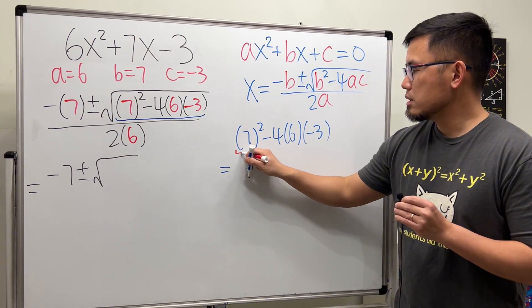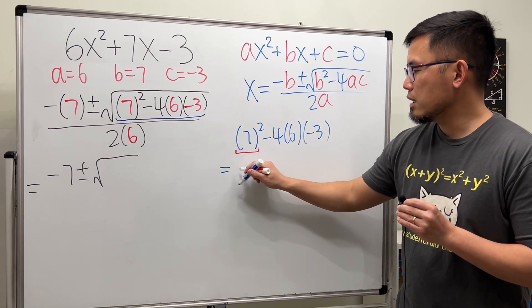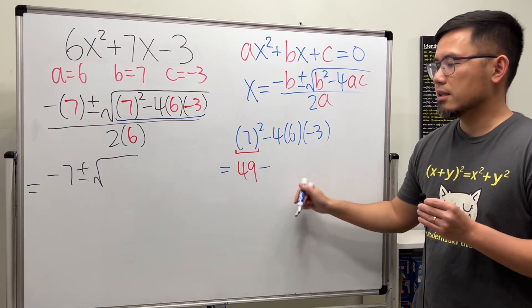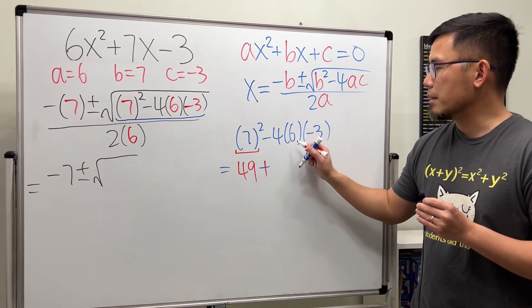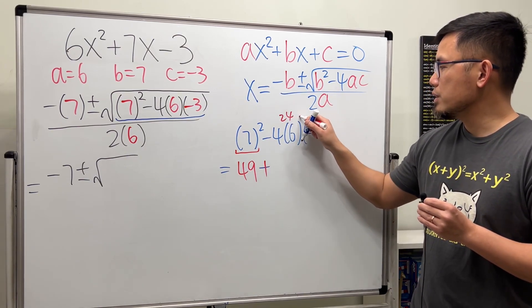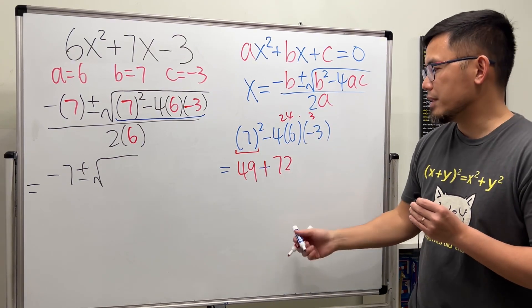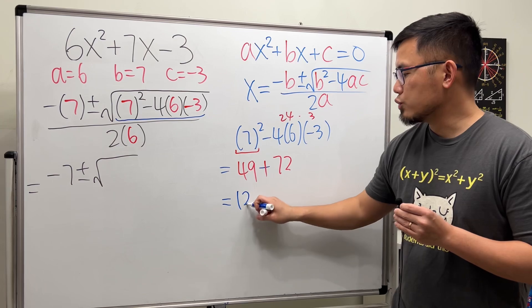Worked out the powers. 7 squared is 49. And then this is a minus times another minus, so it becomes a plus. 4 times 6 is 24. Times the 3 is 72. So 49 plus 72.